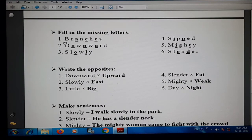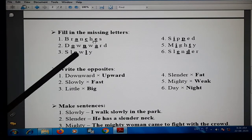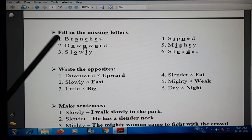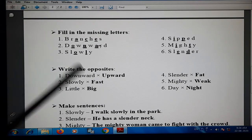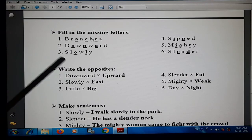Next exercise is fill in the missing letters. Where letters are missing, you have to fill them in. Number one is branches: B, R, A, N, C, H, E, S. These are the missing letters you need to fill in.